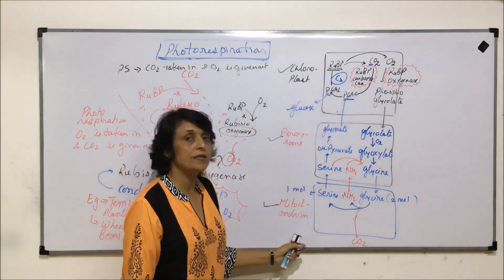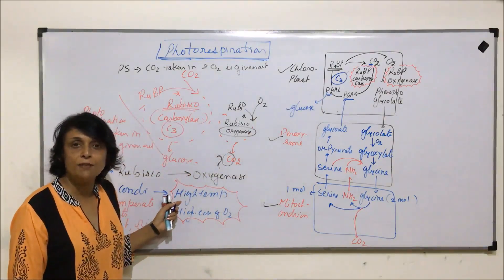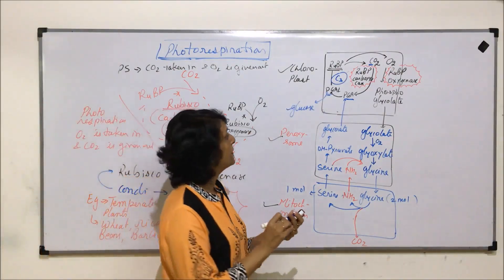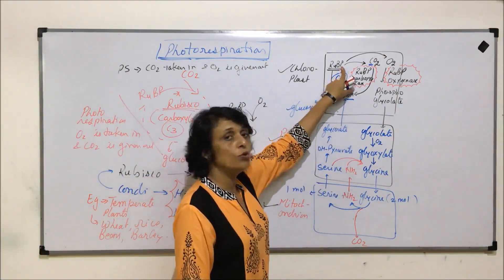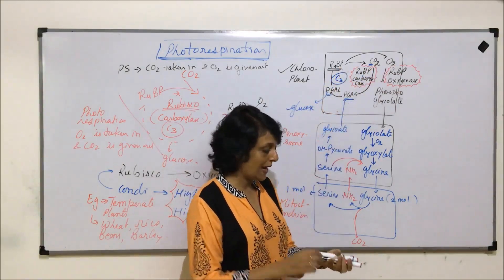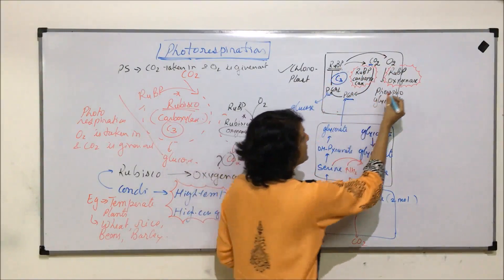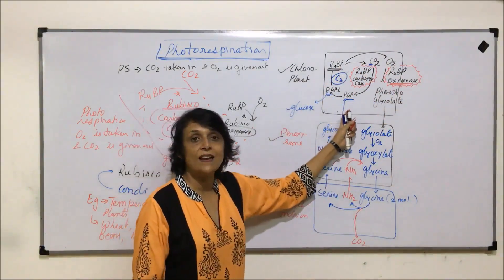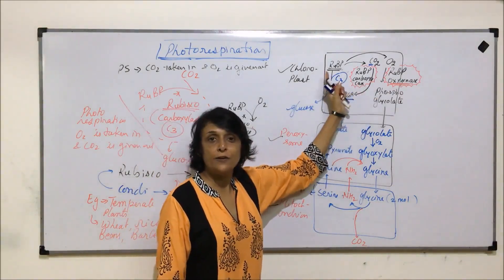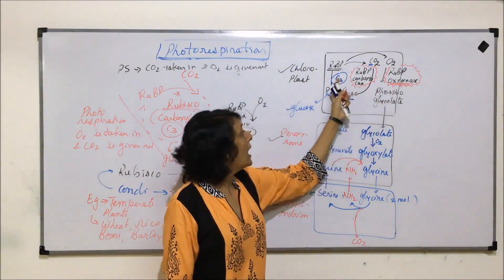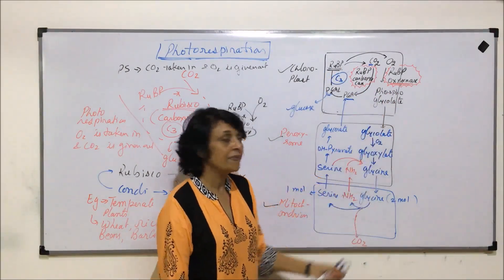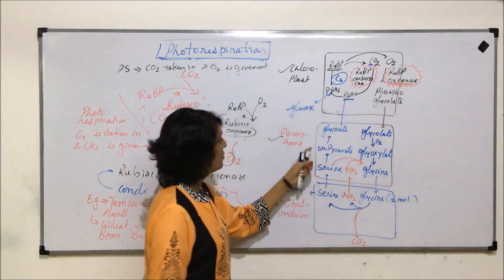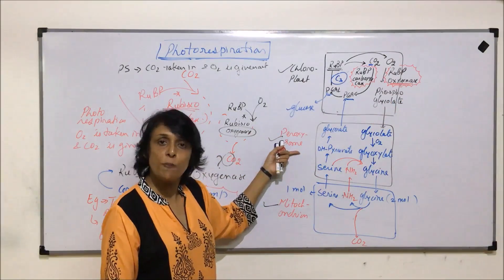But when the conditions change — temperature is higher and oxygen concentration is also higher — RuBP binds with oxygen and the same Rubisco now acts as oxygenase. As a result of RuBP getting oxidized, the compound synthesized is first phosphoglycolate. This changes into glycolate, and glycolate then diffuses into the peroxisome.